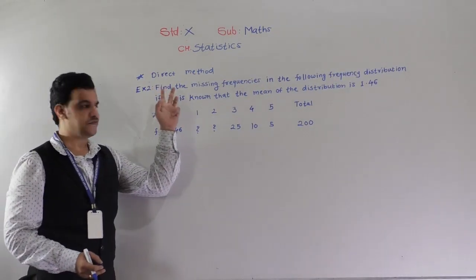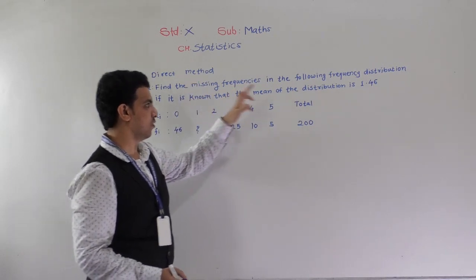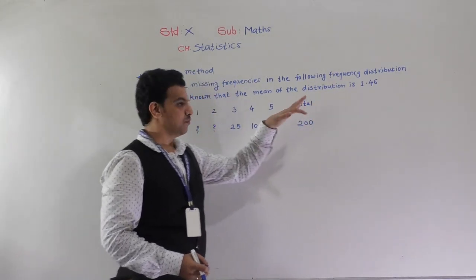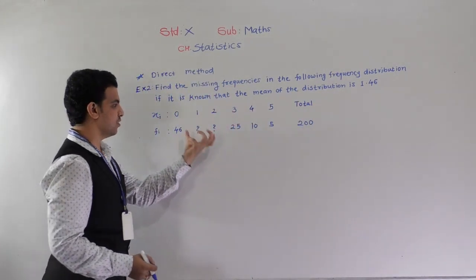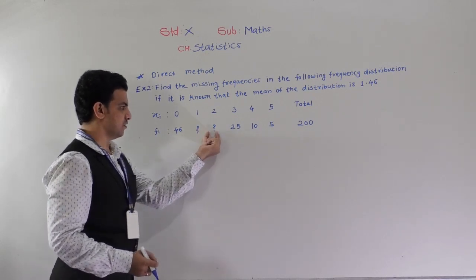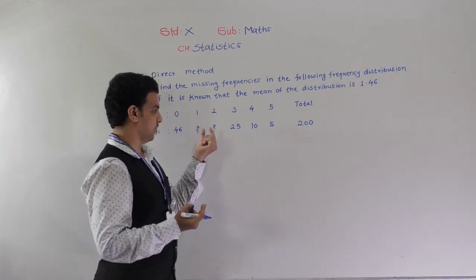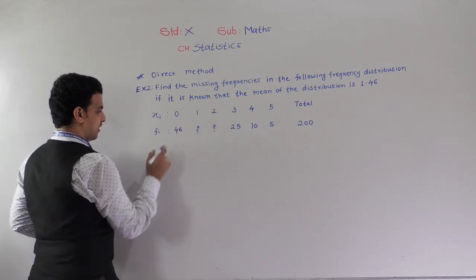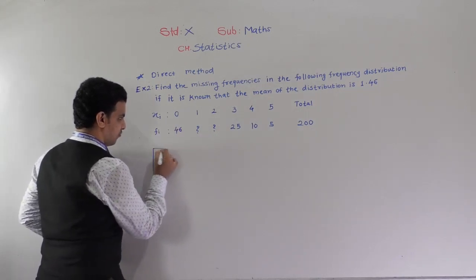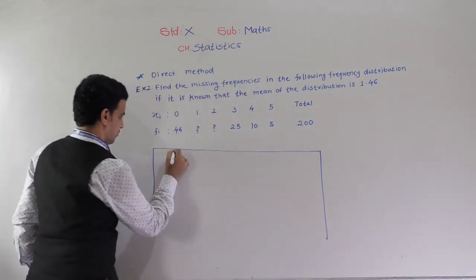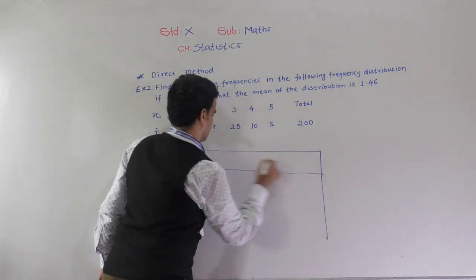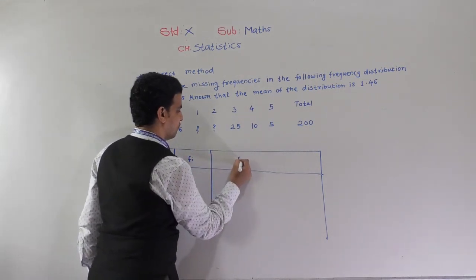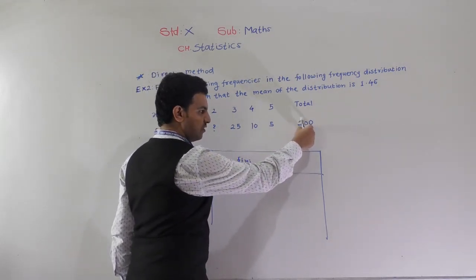Next example: find the missing frequencies in the following frequency distribution if it is known that the mean of the distribution is 1.46. In the previous example only one unknown was there, but now here 2 unknowns are given. So we need 2 variables, x and y or f1 and f2. We have to write this data in tabular form with xi, fi, and fixi. Here summation fi is equal to 200.